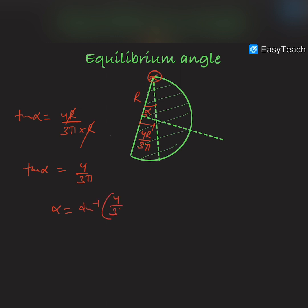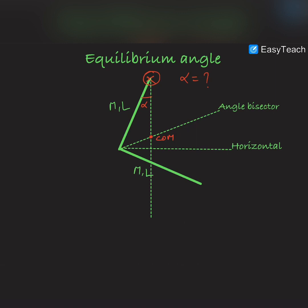So α = tan⁻¹(4/3π). Now in this case you can see there is an L-shaped rod where this angle is 90 degrees. The angle bisector line would not be horizontal in the equilibrium position, so this angle would be 45 degrees. Let this be beta, and this angle would also be 45 degrees. So beta + α + 45° = 180°, and therefore beta = 135° − α.